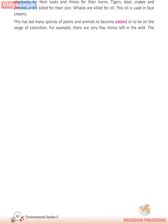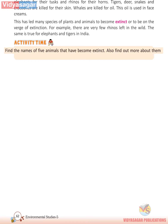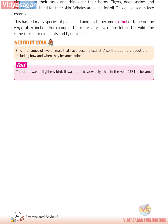This has led many species of plants and animals to become extinct or to be on the verge of extinction. For example, there are very few rhinos left in the wild. The same is true for elephants and tigers in India. The dodo was a flightless bird that was hunted so widely that in the year 1681 it became extinct. Now there are no more dodos on the earth.